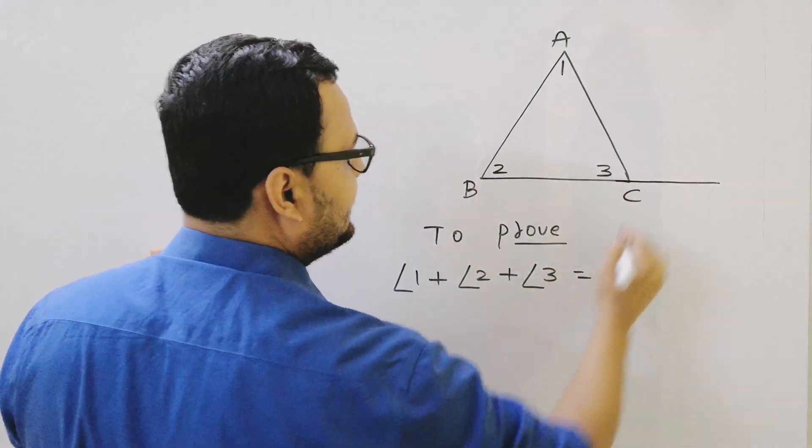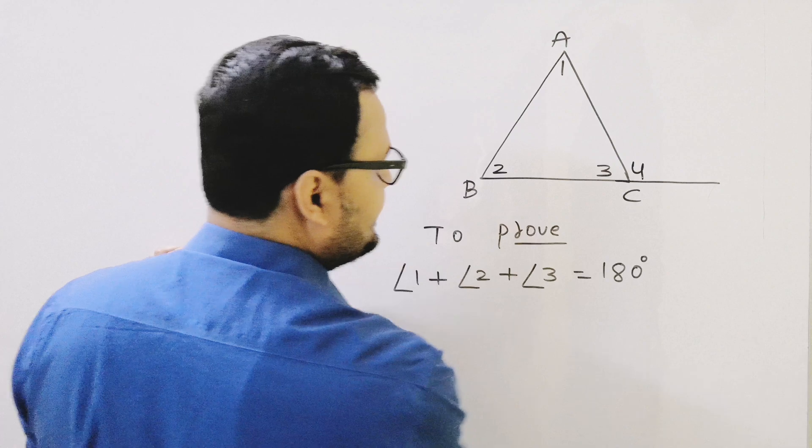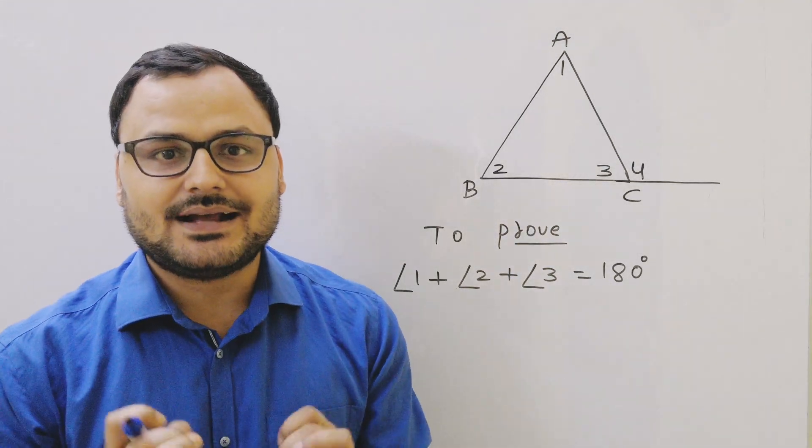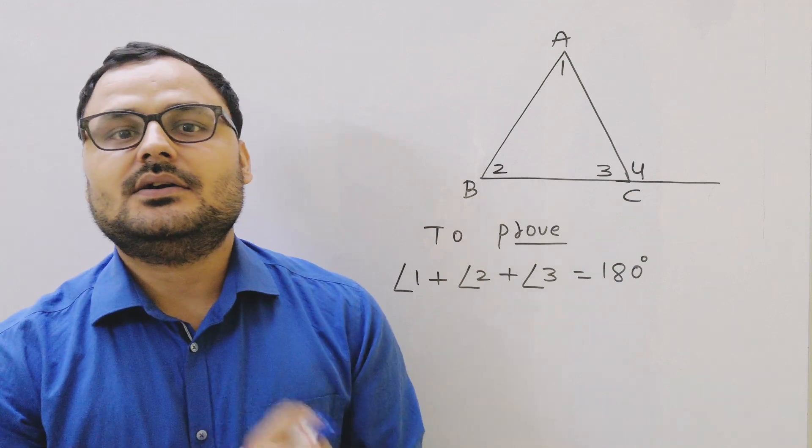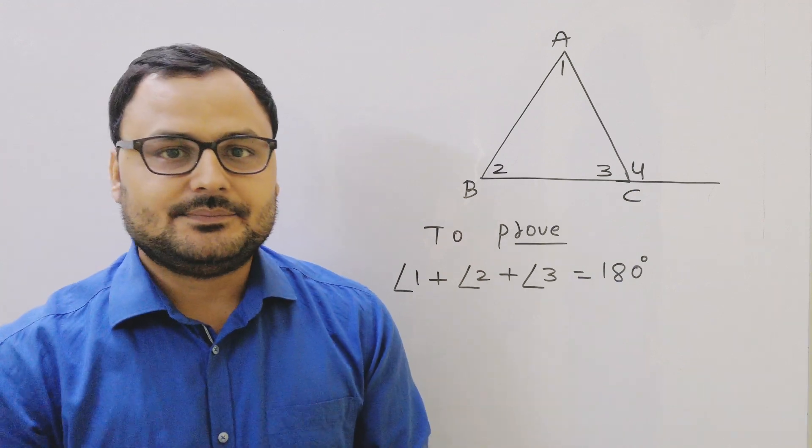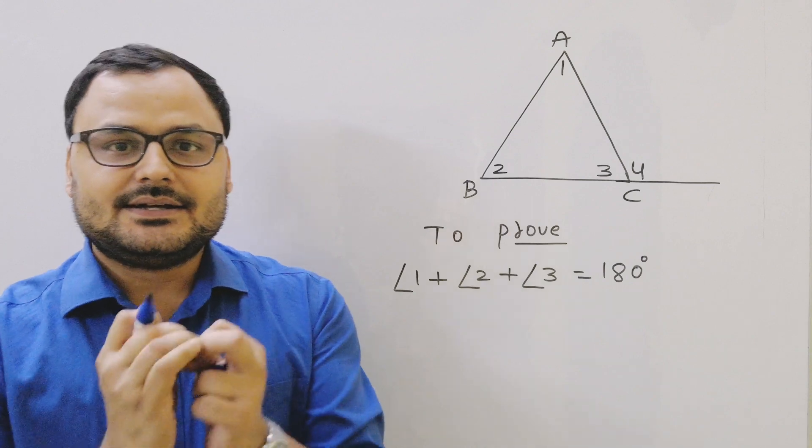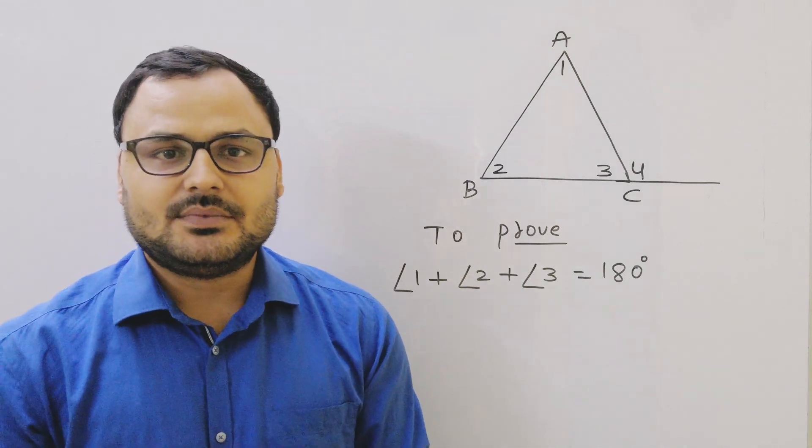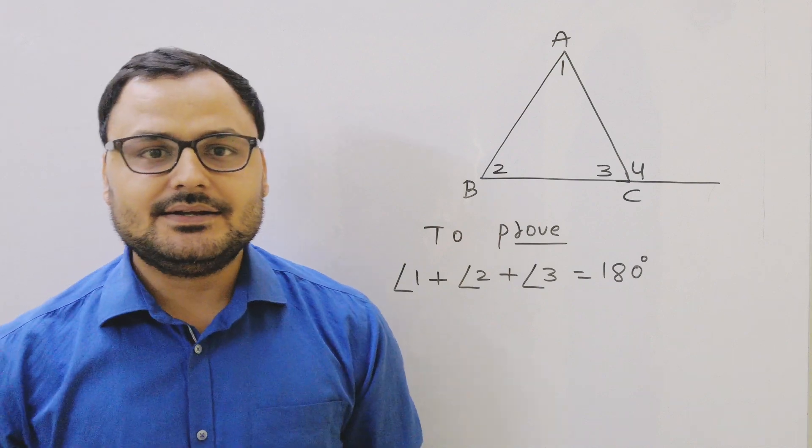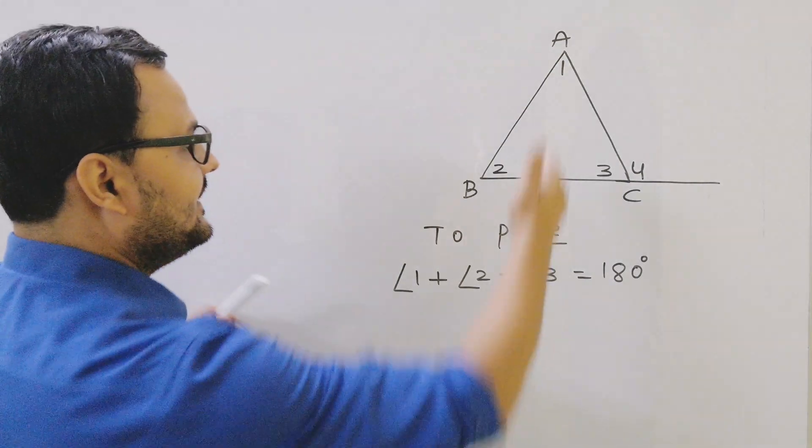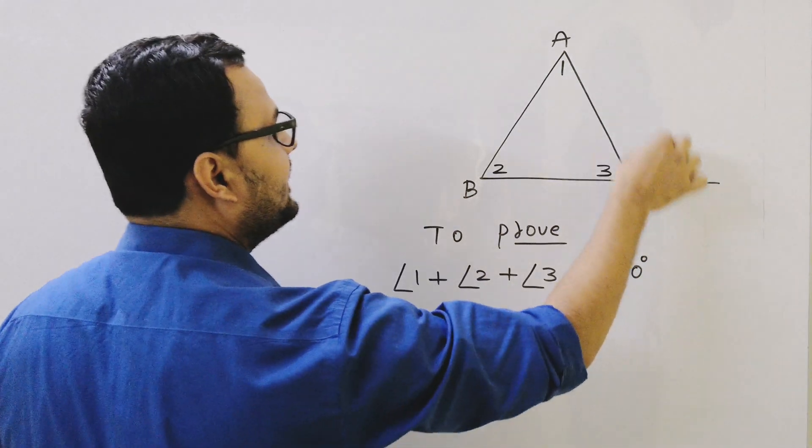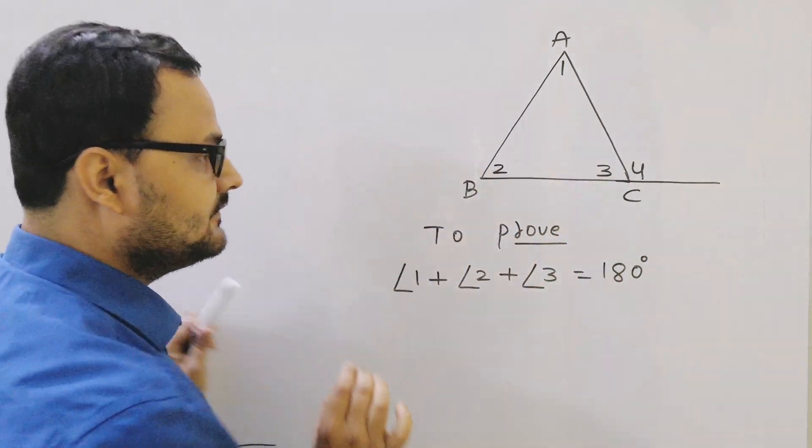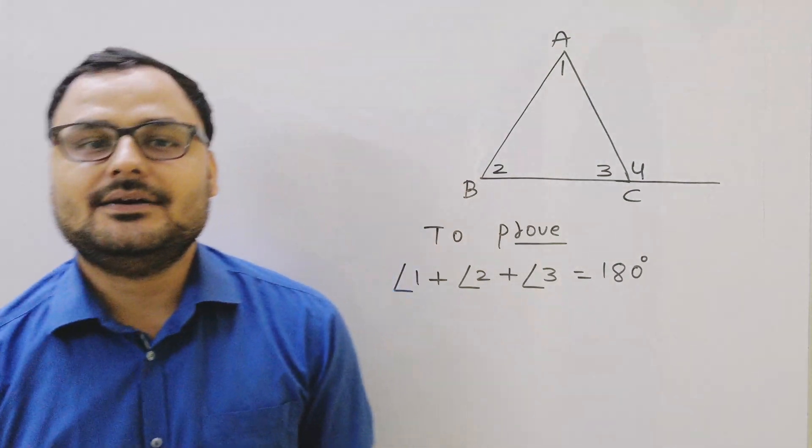I can write it as angle 4. Now I am going to use exterior angle property or exterior angle theorem. It says that the exterior angle of a triangle equals the sum of two opposite interior angles. It means in this diagram, angle 4 equals angle 1 plus angle 2.